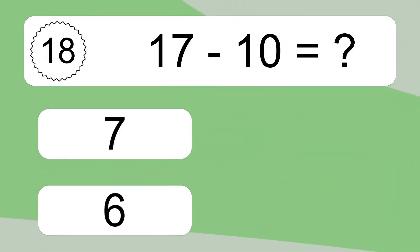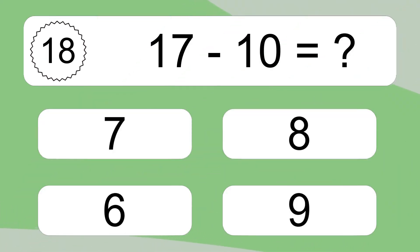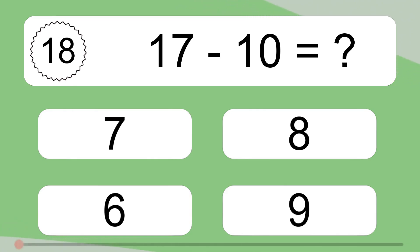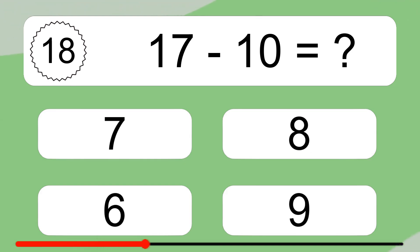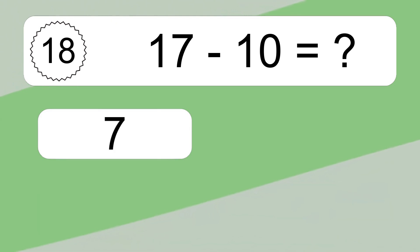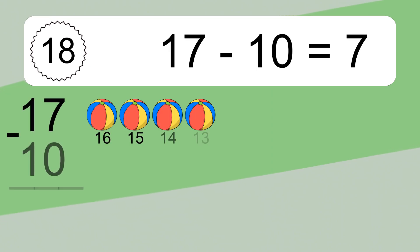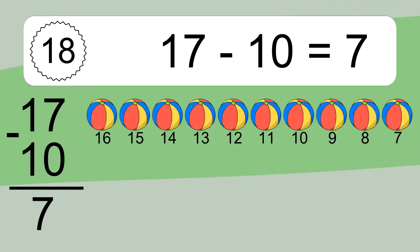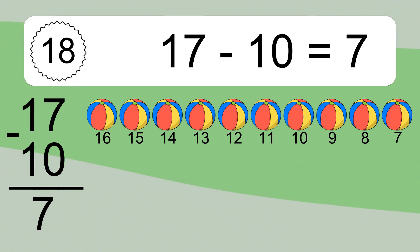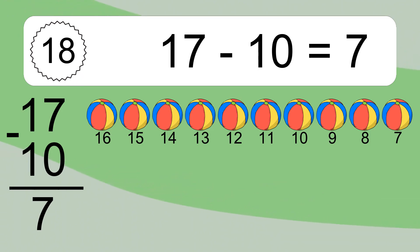17 minus 10 equals what? 17 minus 10 equals 7. Let's count it. 16, 15, 14, 13, 12, 11, 10, 9, 8, 7.